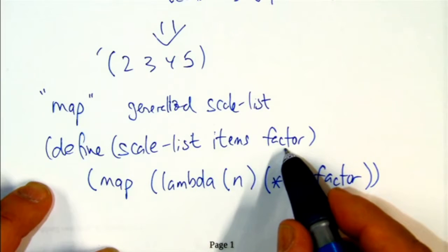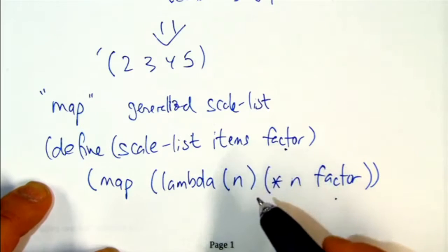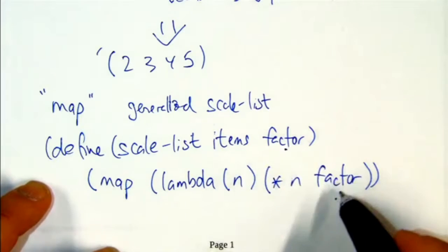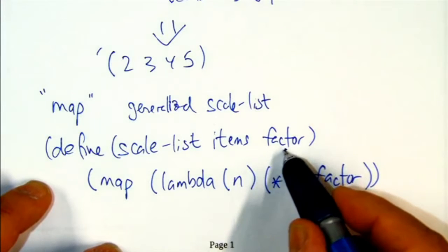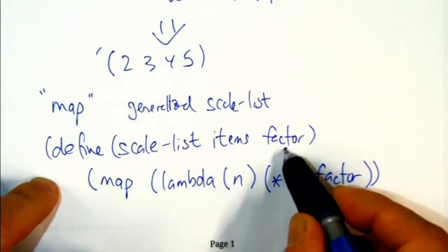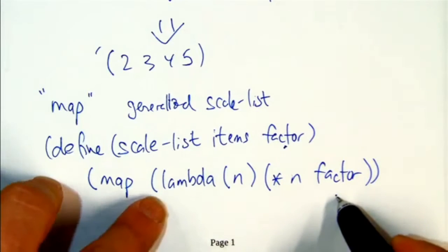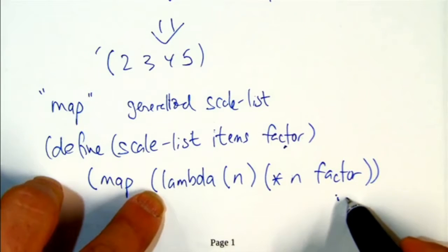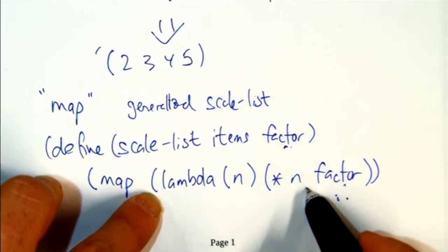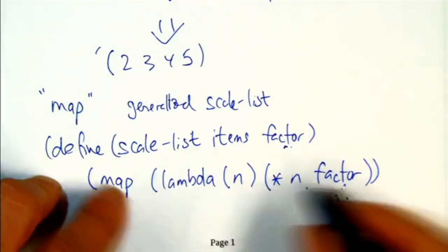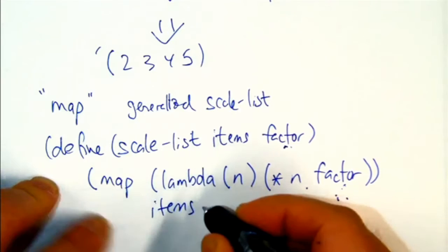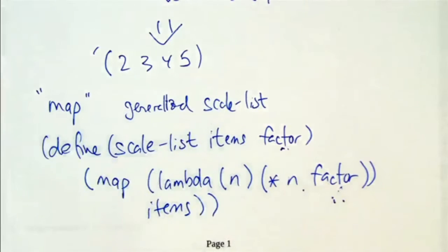This factor becomes that one. Next week, we're going to go into the whole environment model that explains exactly how that happens. But lexically, you can see that that makes sense. This is a concrete number at the point where this lambda is evaluated. The point where this lambda function is created, that's just a number that we handed in, like 10. And then we bundle that 10 inside of the lambda expression that says, take a number and multiply it by 10. And then we just map that function over our list of items. So that's how you would write scale list now that you know Map exists.